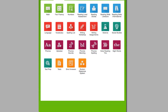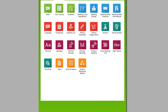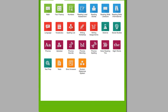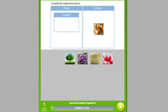Students see short answer questions in grades 3 through 8 in the Science, Social Studies, Reading Skills, and Writing Workshop modules. When completing a lesson topic in one of these subjects, the student sees multiple question types, like multiple choice or touch manipulatives.